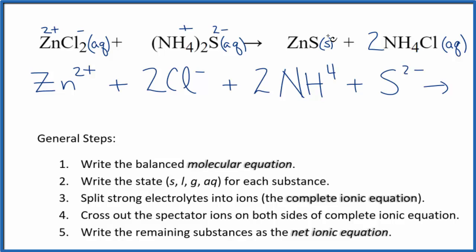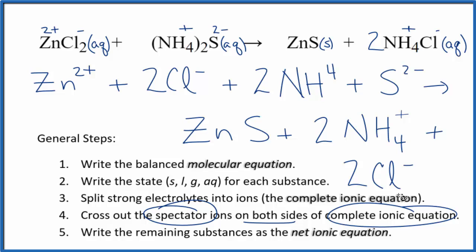For the products, we don't split solids apart. So we just have zinc sulfide. And then we have the ammonium ion and the chloride. So we have two ammonium ions, just like in the reactants, and then two of these chloride ions, also like the reactants. So now we have our complete ionic equation. We can cross out spectator ions. They're on both sides of the complete ionic equation.